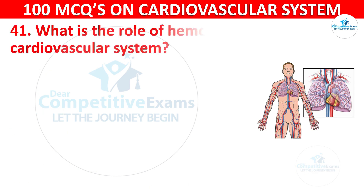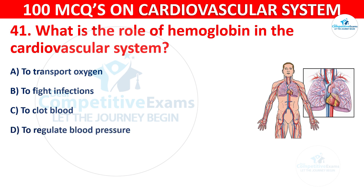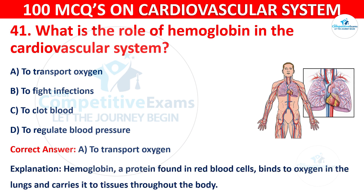Question 41: What is the role of hemoglobin in the cardiovascular system? Options are: To transport oxygen, To fight infections, To clot blood, or To regulate blood pressure. The correct answer is A, to transport oxygen. Hemoglobin, a protein found in red blood cells, binds to oxygen in the lungs and carries it to tissues throughout the body.